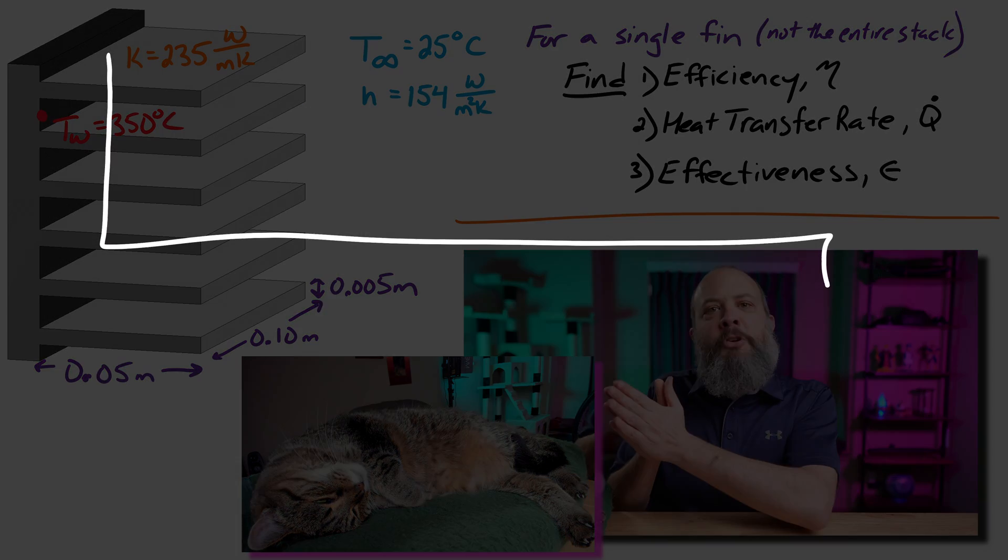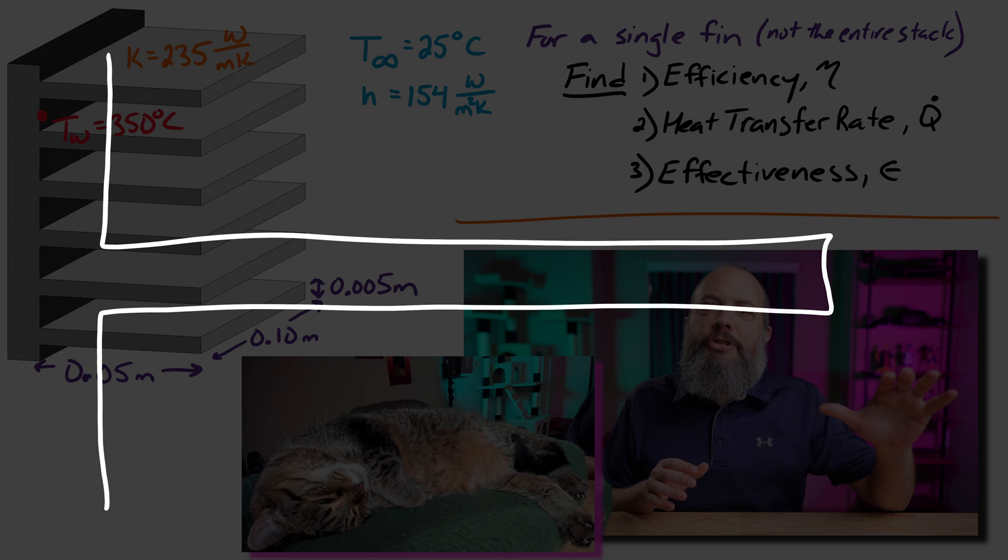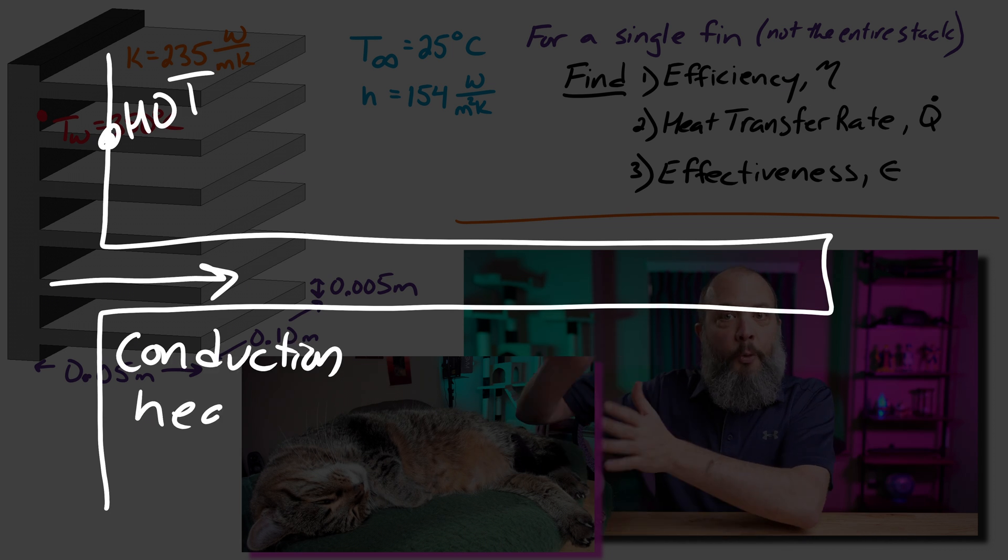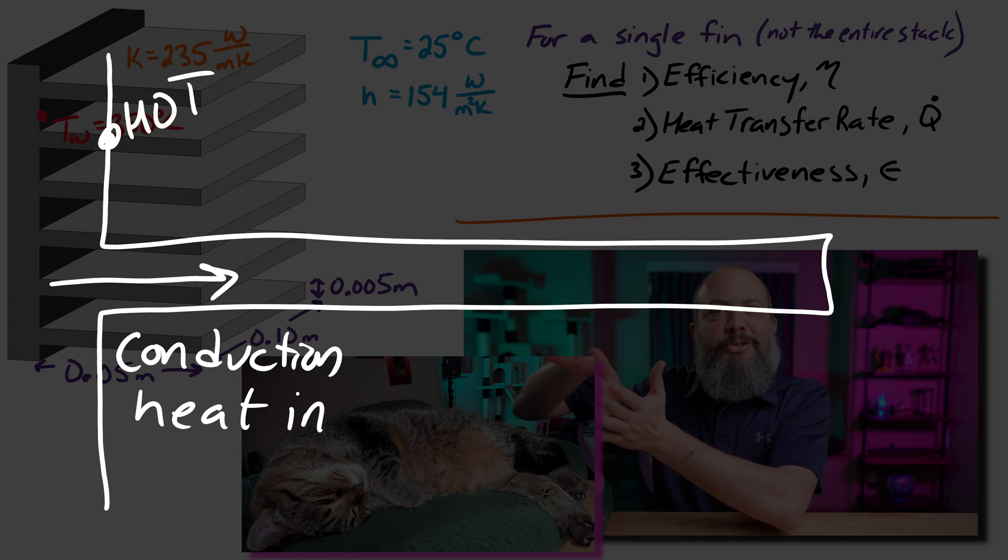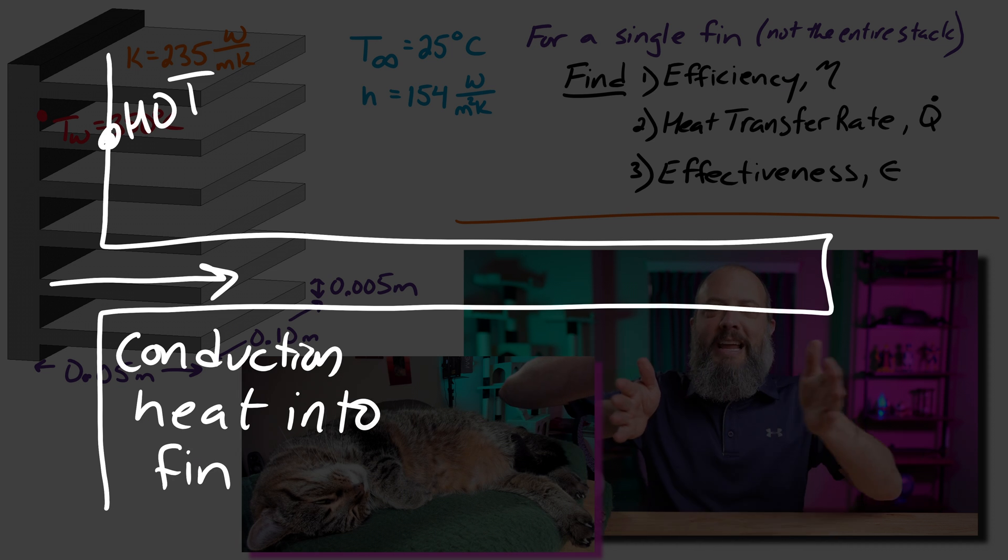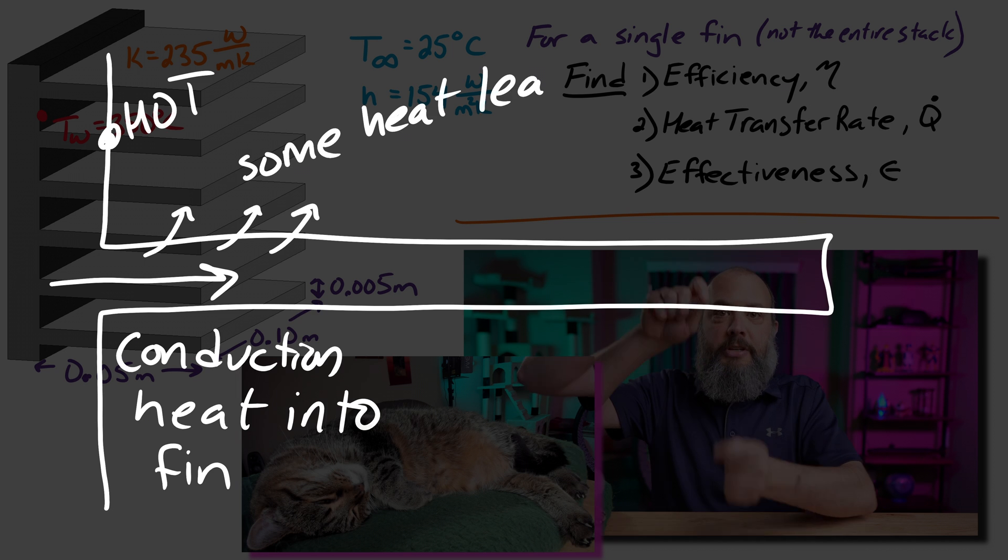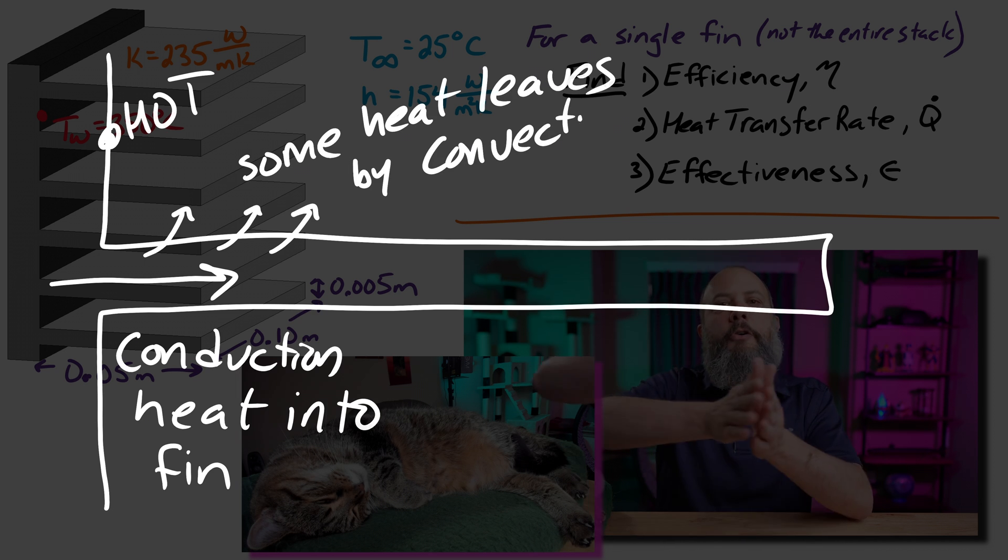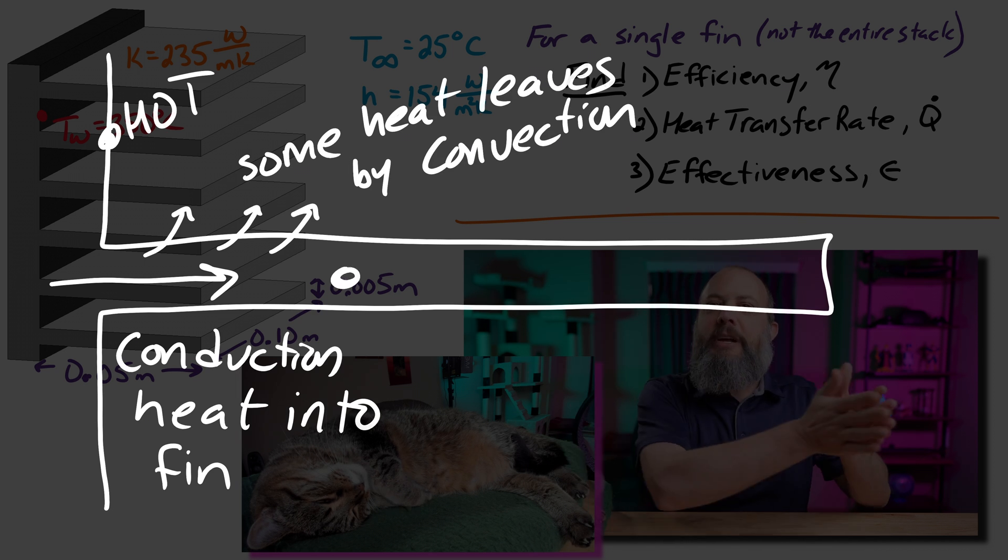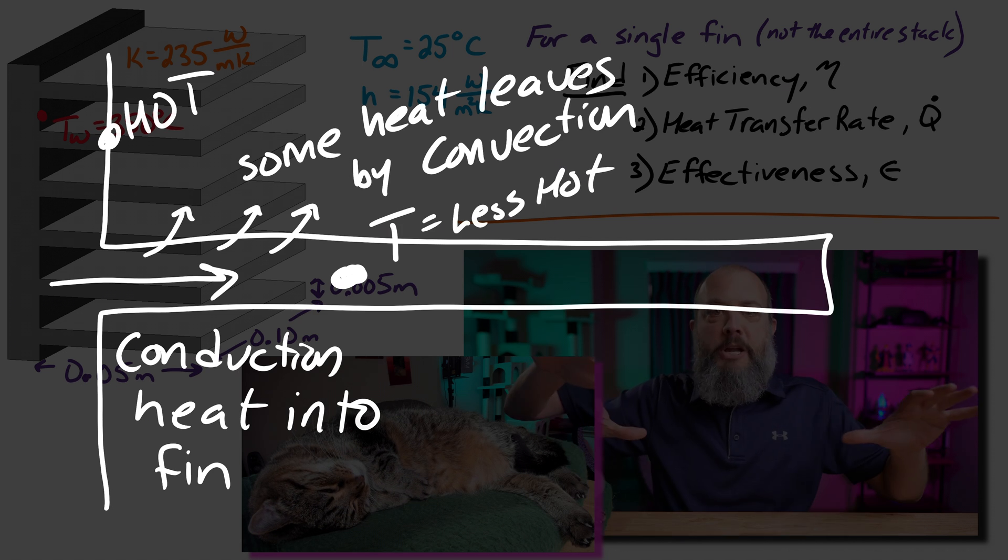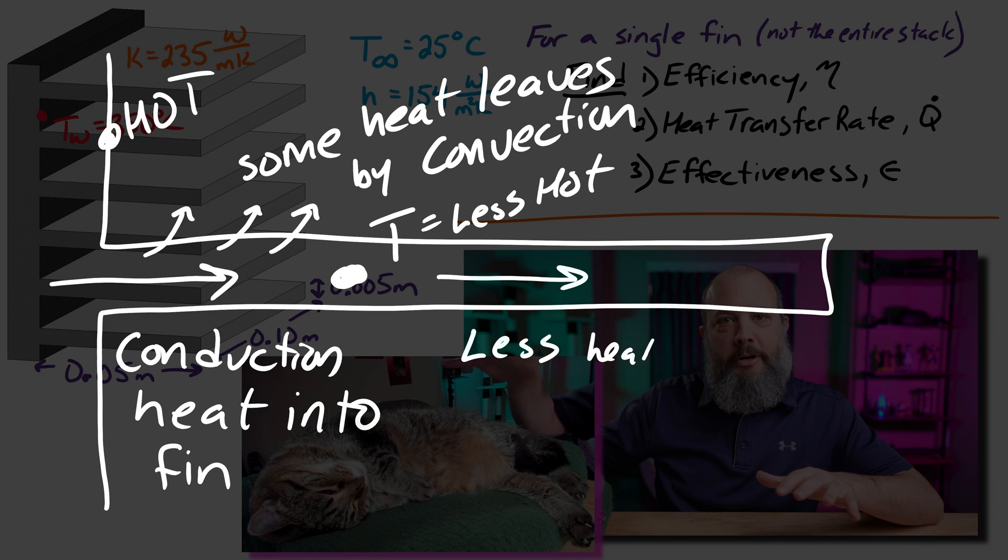If the wall temperature is hot and the air temperature is cold, along the length of a fin, the part of the fin that's really close to the wall is going to be the same temperature as the wall. But across the length of the fin, as energy escapes from the fin to the atmosphere, the further away from the wall you get, the cooler and cooler the fin temperature will be. The entire fin will not be the same temperature as the wall.